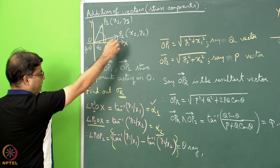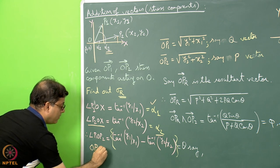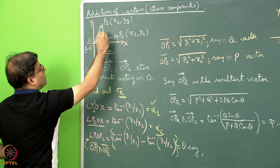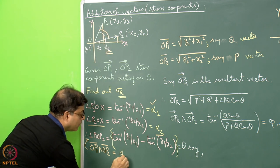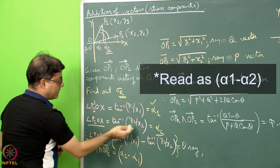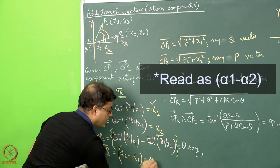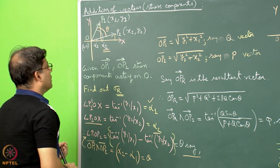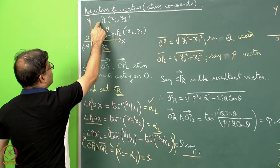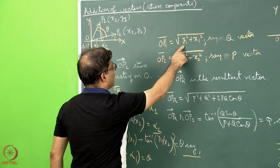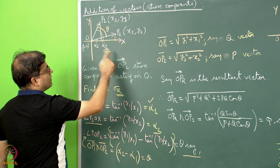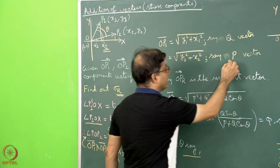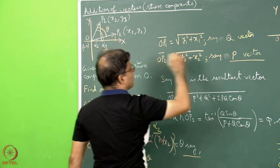The angle between OP1 and OP2, which is the angle P1OP2, will be equal to alpha2 minus alpha1. Let us say this angle is equal to theta, so the angle between the two stresses is theta. The length OP1, that is the magnitude of the stress, is the square root of y1 squared plus x1 squared, and the length OP2 is the square root of y2 squared plus x2 squared. We now consider OP2 as vector p and OP1 as vector q.